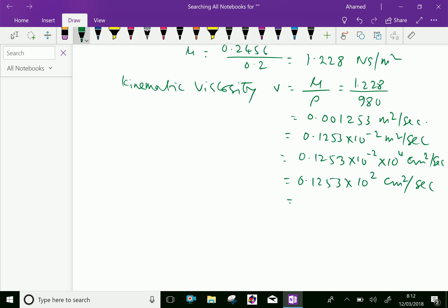Which is further equal to 12.53 stokes. Because centimeter squared per second is equivalent to 12.53 stokes.